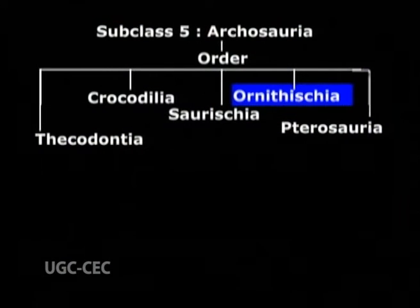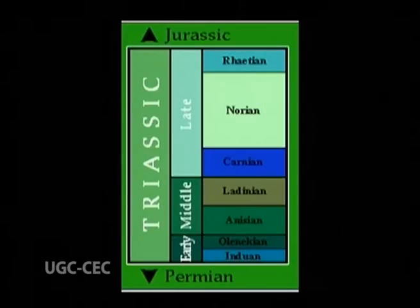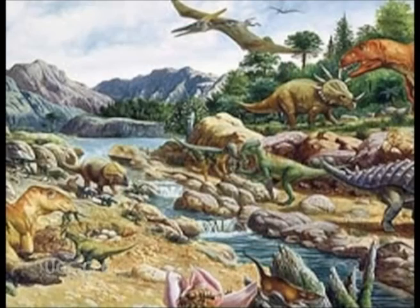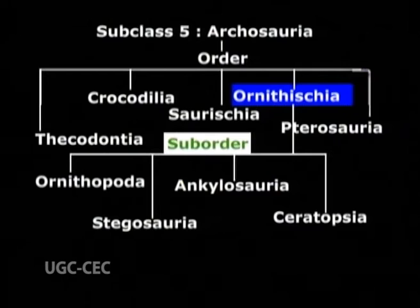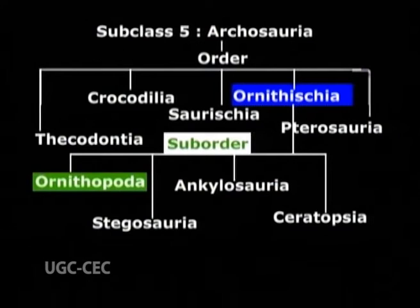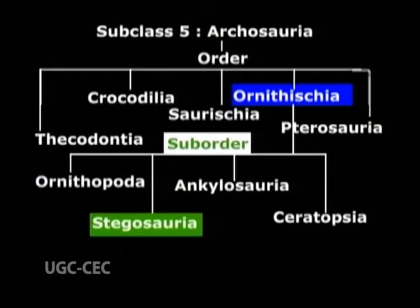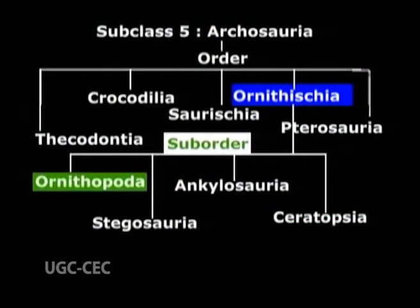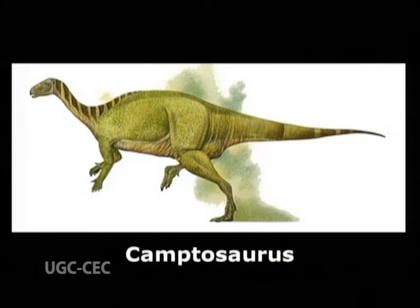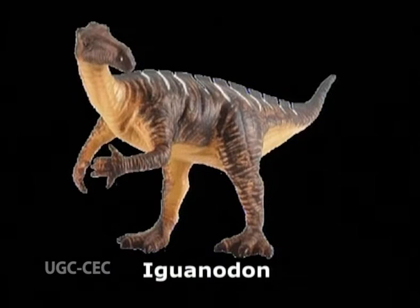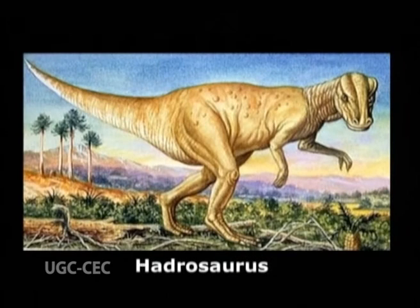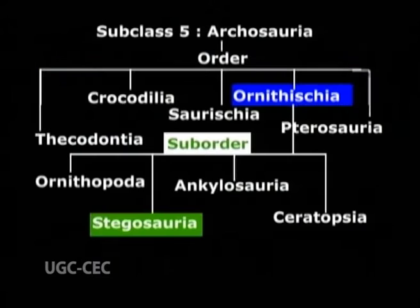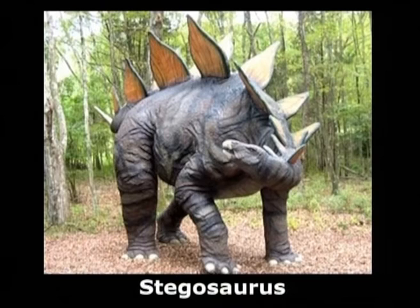Order 4, Ornithischia, lived during Triassic to Cretaceous and is further classified into four suborders: Ornithopoda, Stegosauria, Ankylosauria, and Ceratopsia. Suborder 1, Ornithopoda. Examples are Camptosaurus, Iguanodon, and Hadrosaurus. Suborder 2, Stegosauria. Example: Stegosaurus.